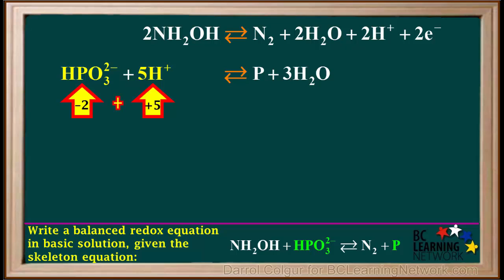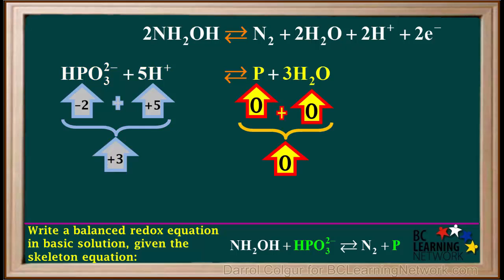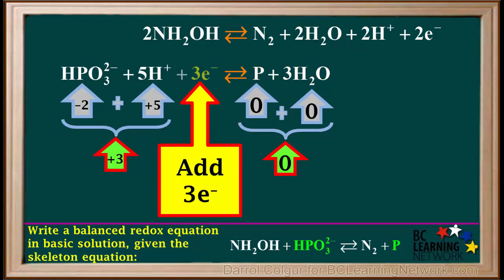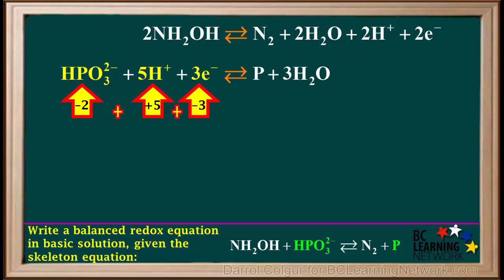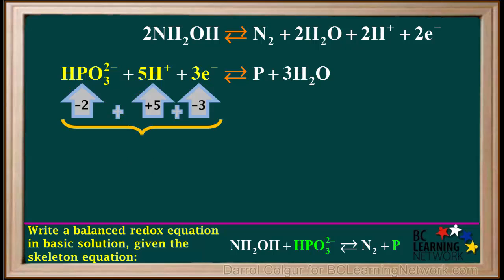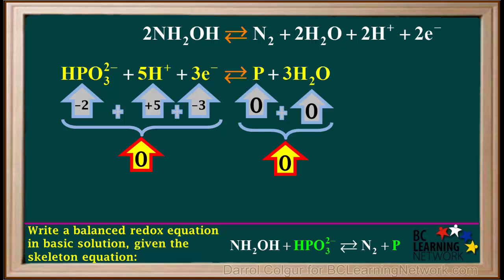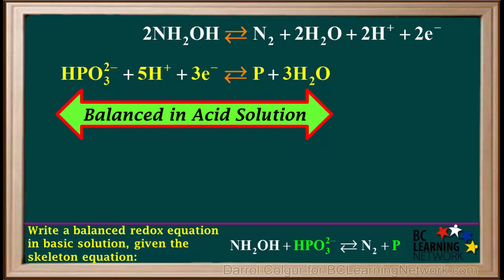The total ionic charge on the left side is negative 2 plus positive 5, which equals positive 3. And the total charge on the right side is zero. So to balance charge, we add three electrons to the left side. The total charge on the left side is now negative 2 plus positive 5 plus negative 3, which adds up to zero. So the total charge on each side is zero, and the charge is now balanced. This half-reaction is now balanced in acid solution.